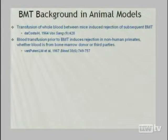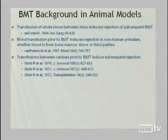As early as 1964, it was appreciated in mice that the transfusion of whole blood between MHC-identical, minor-mismatched mice could cause the rejection of a subsequent bone marrow transplant. Several years later the same phenomenon was observed in non-human primates, and importantly in these primates it didn't matter if the blood was from the bone marrow donor or a third-party monkey.